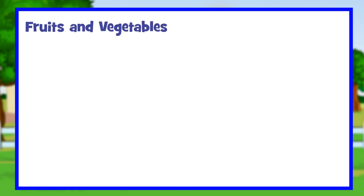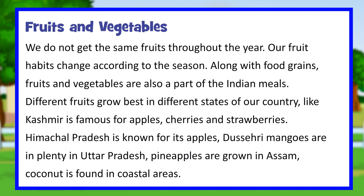Fruits and vegetables. We do not get the same fruits throughout the year. Our fruit habits change according to the season. Along with food grains, fruits and vegetables are also a part of the Indian meals. Different fruits grow best in different states of our country. Kashmir is famous for apples, cherries and strawberries. Himachal Pradesh is known for its apples.